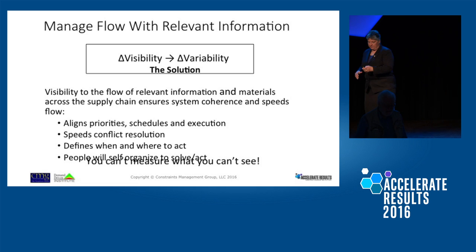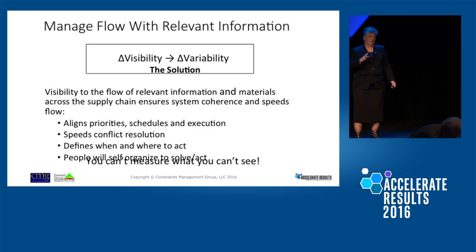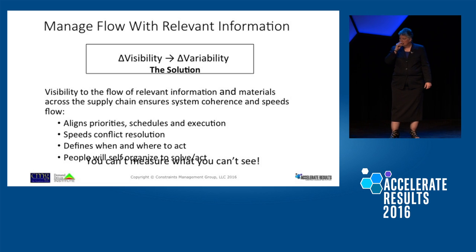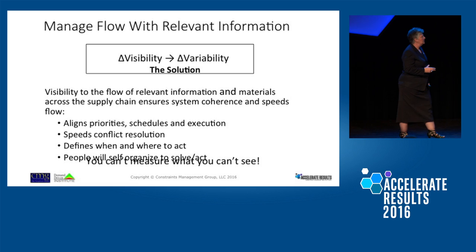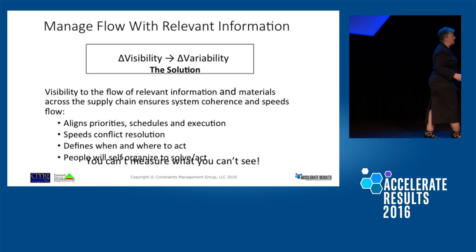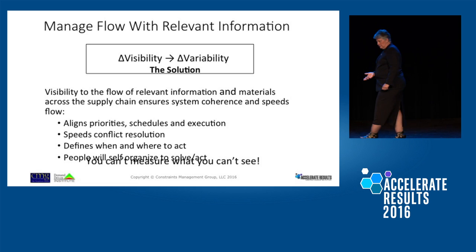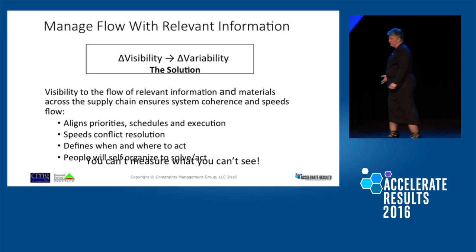So where we finished up was we were looking at flow, the importance of flow, and what's relevant information. How do we manage flow with relevant information? Because what we said was: as I improve visibility, that impacts variability. As I impact variability, it improves flow — improve flow, improve ROI.